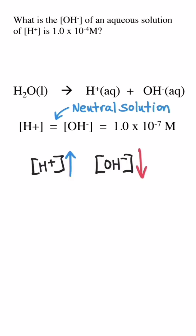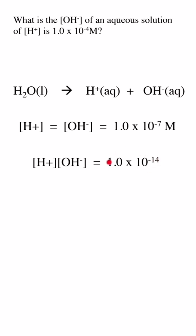No matter what, if you multiply the two concentrations together, they always come out to 1.0 times 10 to the negative 14. This is the auto-ionization constant of water, or Kw.